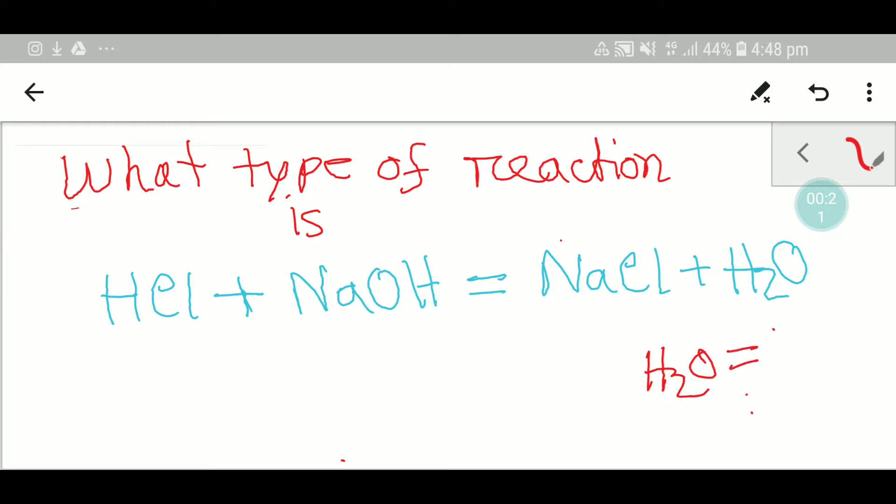Remember we can write water like this: HOH, and this will help us understand the type of reaction clearly. Let me erase this at first. In this reaction we see that hydrogen has gone with OH and sodium has gone with sodium chloride.